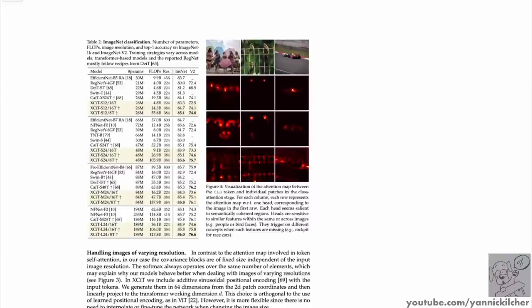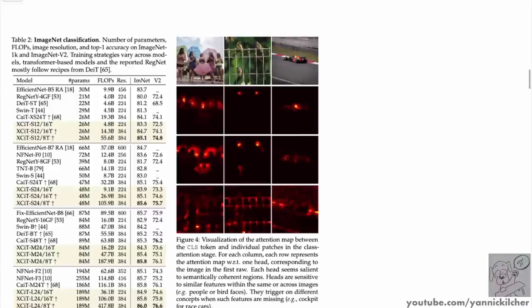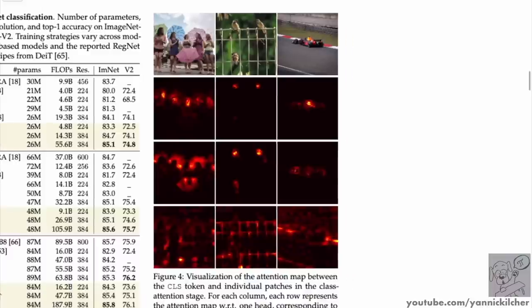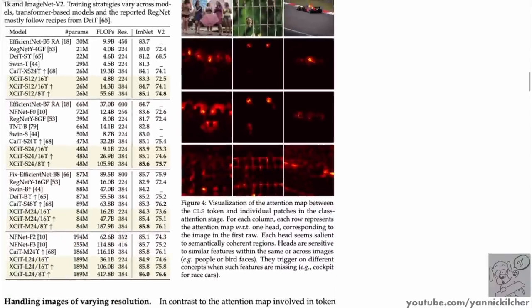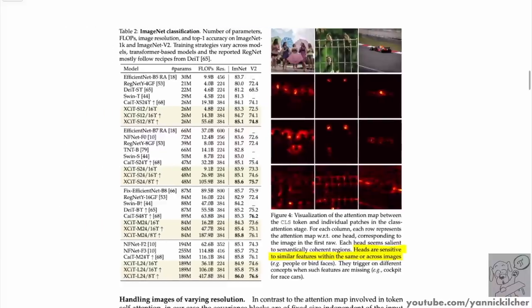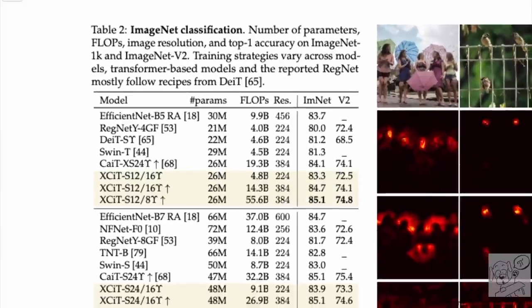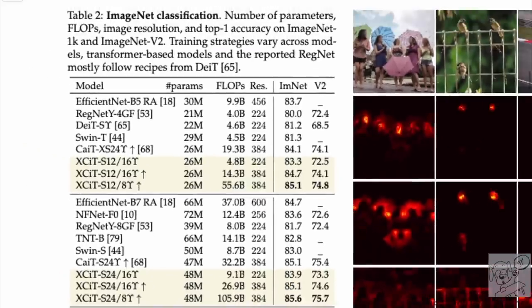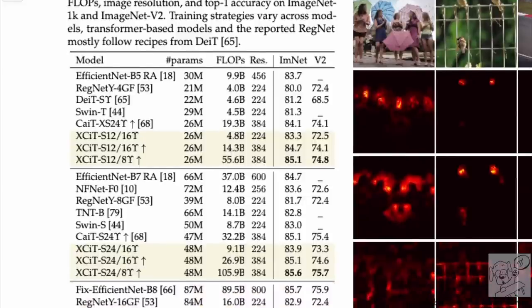I would love to see this architecture applied to other tasks such as language, to see its transformer-like properties. Being essentially a conv net makes it well-suited to images. The attention maps of the classification layer look super clean — heads are sensitive to similar patterns within the same or across images. We'll all have to decide what a transformer really is.